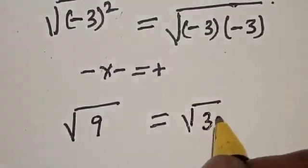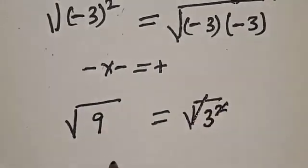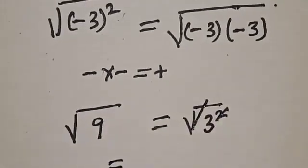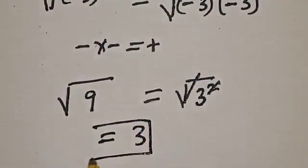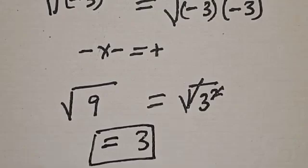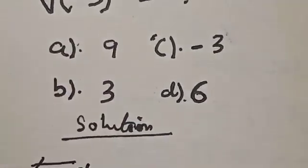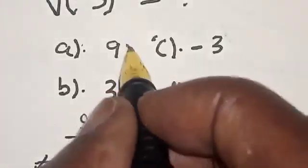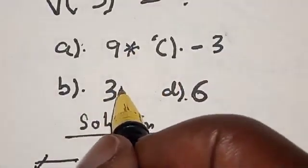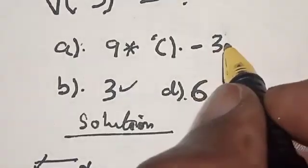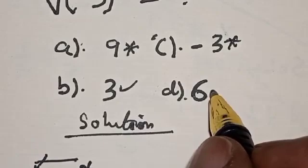Let's check to confirm the correct option. Then we have A is equal to 9, no. B is equal to 3, yes. C is equal to minus 3, no. And D is equal to 6, no. The correct option is 3.